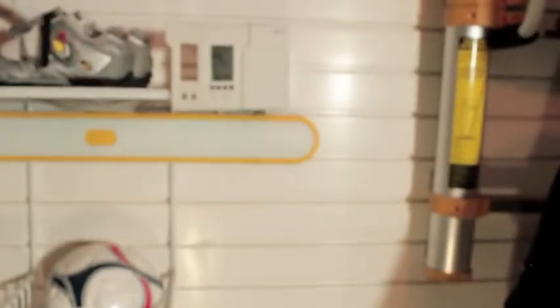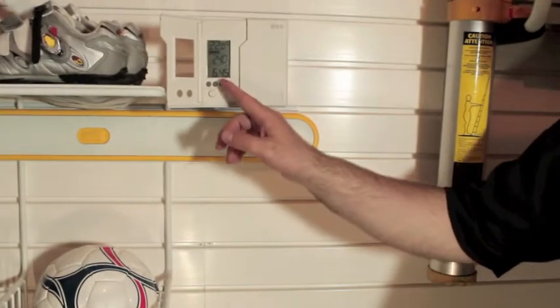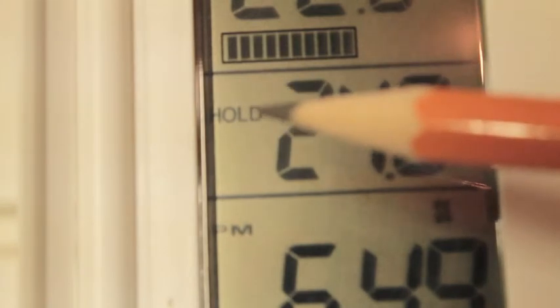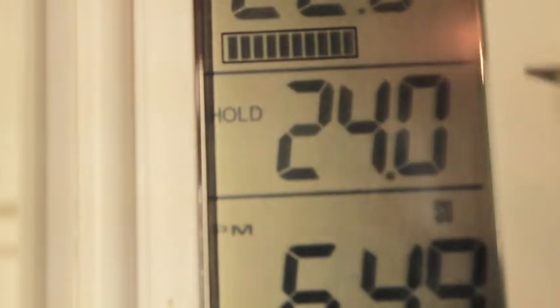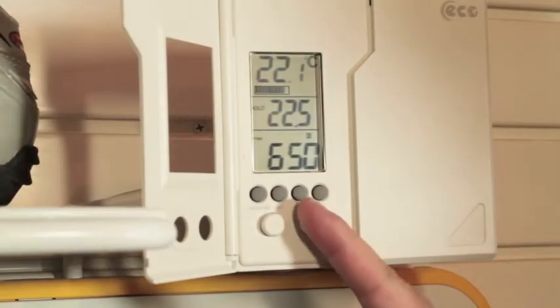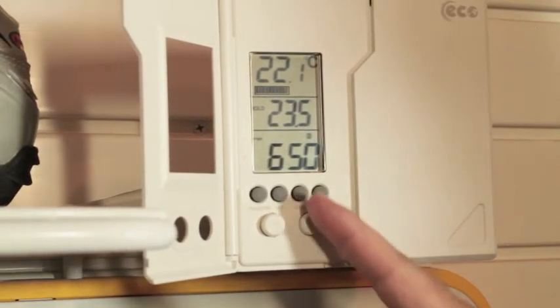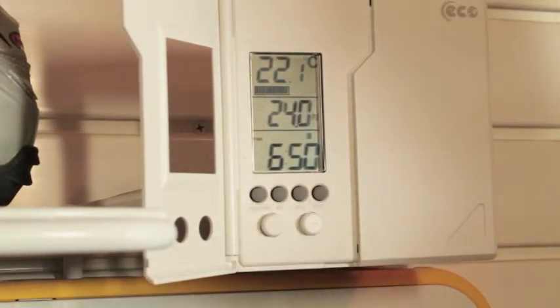If you don't want the thermostat to adjust the temperature automatically, you can push the hold button to put it into a manual mode. The word hold now appears on screen instead of the word override or the program periods. Whatever temperature is set will now be locked in until you change it yourself or the hold button is pressed again returning you to the program.